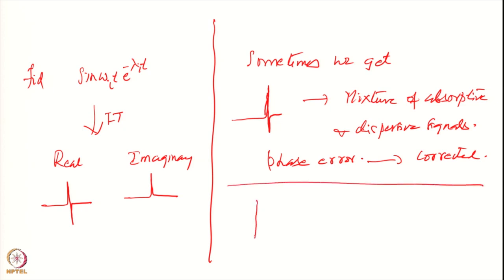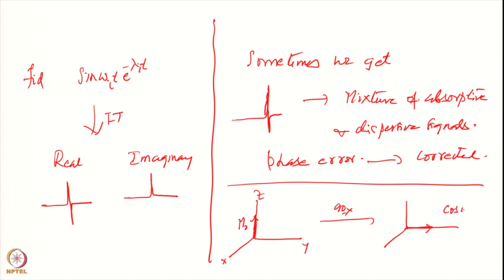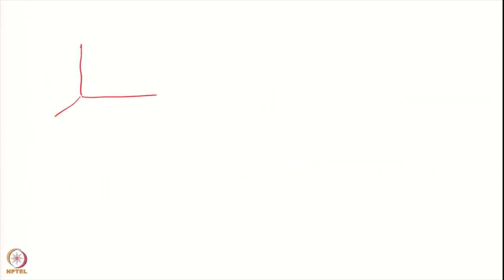Suppose the experiment is done as follows: we have the initial magnetization M₀. If we apply a 90-degree pulse exactly along the x-axis, the magnetization will come exactly along the y-axis, and the signal will be cosine(ωᵢt) · e^(−λᵢt). But often this is not achieved — the magnetization ends up at some other position in the transverse plane.